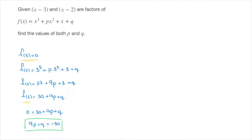And that's our first equation — I'll call it E1, E as in equation. Now, to obtain a second equation, we use the second piece of information we were given: that x minus 2 is a factor.